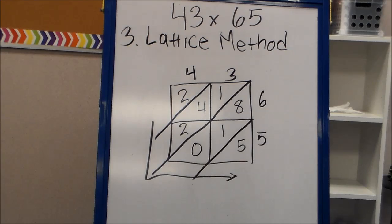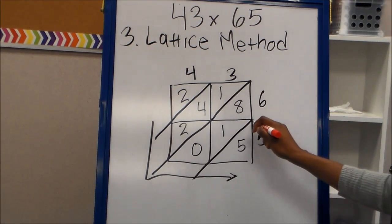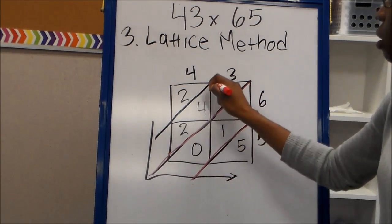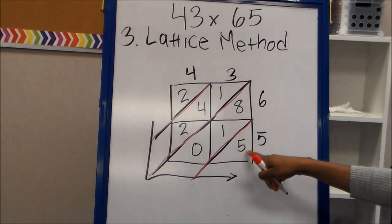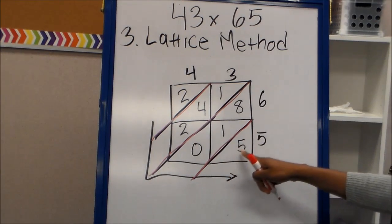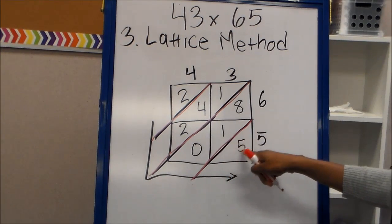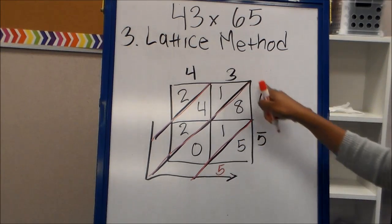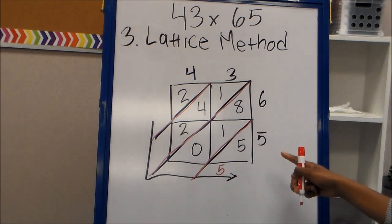Now the second step is to add. So I'm going to add my diagonals. So in this first diagonal here, I have just five. Five plus nothing else, which is five. These numbers on the outside, I'm going to ignore those because I only use those to multiply first.